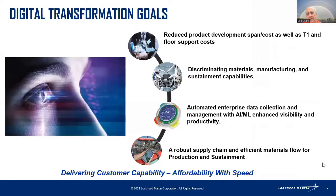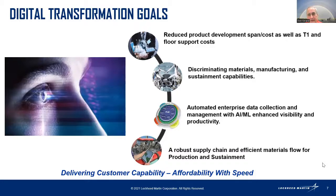What are our four pillars of digital transformation? One: reduce product development costs and time to market. Two: use discriminating materials, manufacturing capabilities, and sustainment. Three: automate enterprise data collection processes and use artificial intelligence and machine learning to get more insight. And four: maintain a robust supply chain — we purchase about 75% of the products we build, and that has been really tough the last couple of years with the COVID impact.